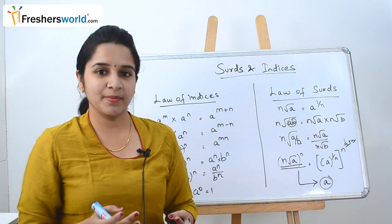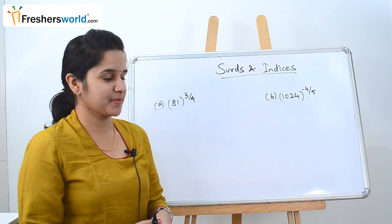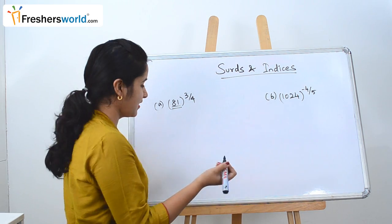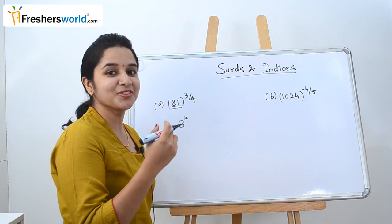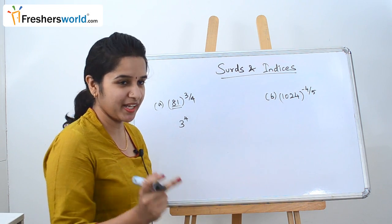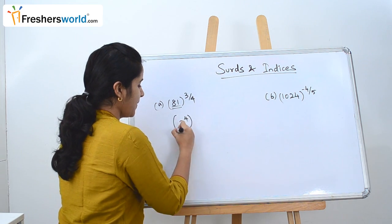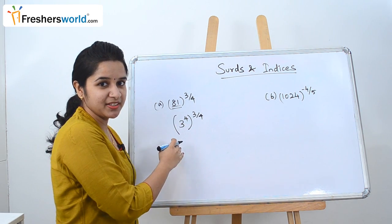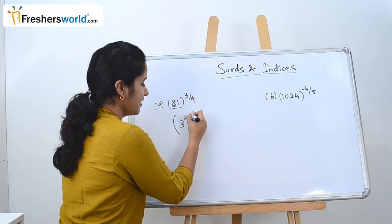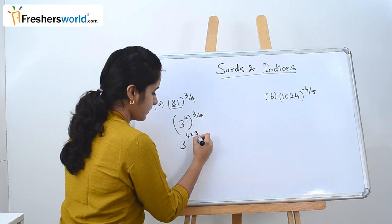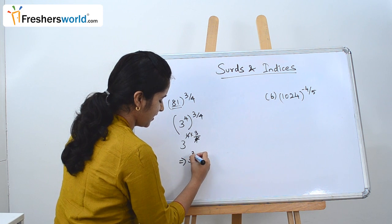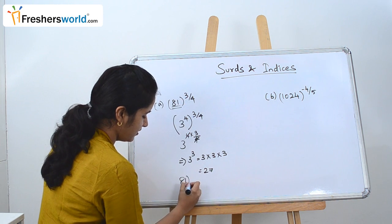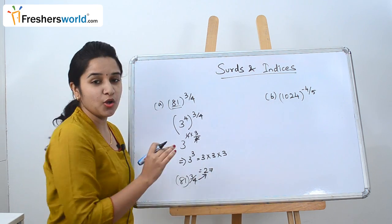To understand this concept better, let's solve some simple sums. The first question is 81^(3/4). We know 81 is nothing but 3^4, since 3×3=9, 9×3=27, 27×3=81. So we have (3^4)^(3/4). Multiplying the powers: 4 × (3/4) = 3, which gives us 3^3 = 27. So 81^(3/4) is nothing but 27.